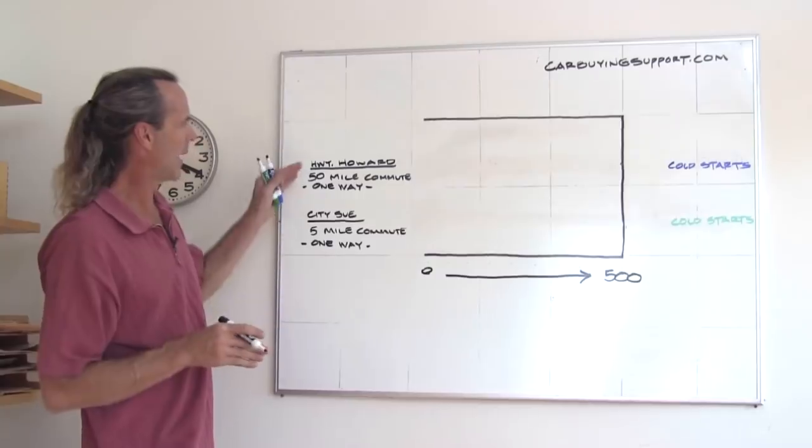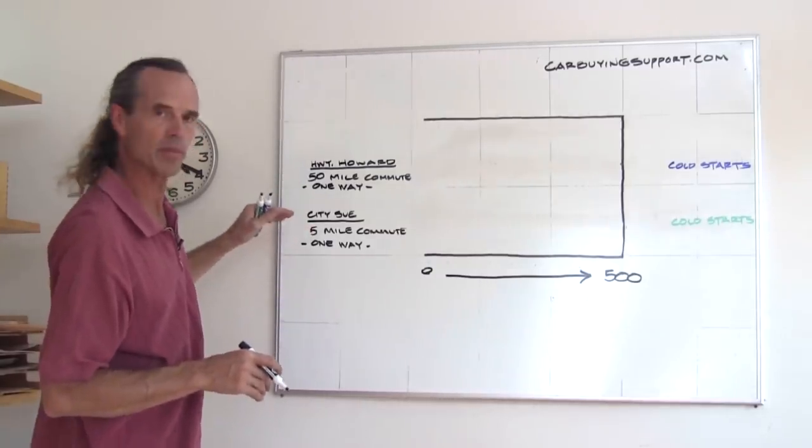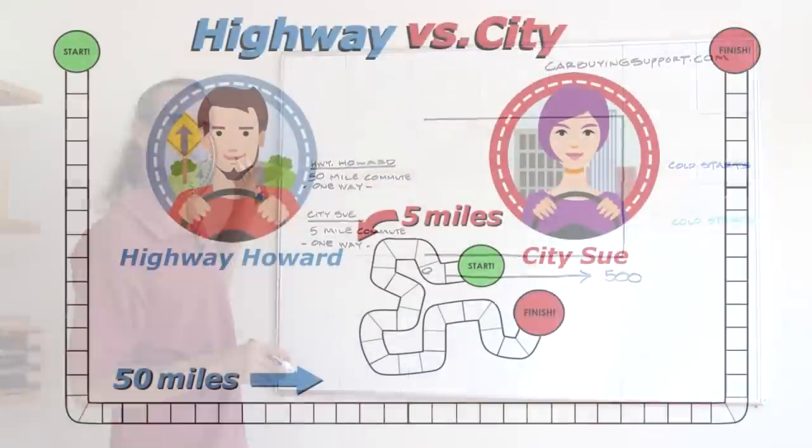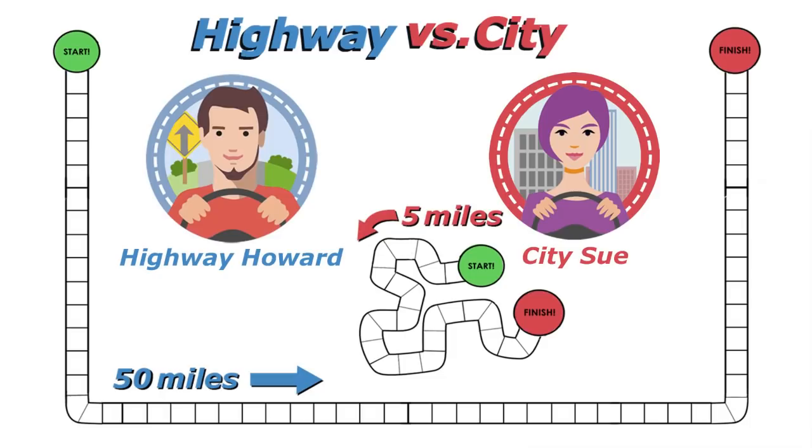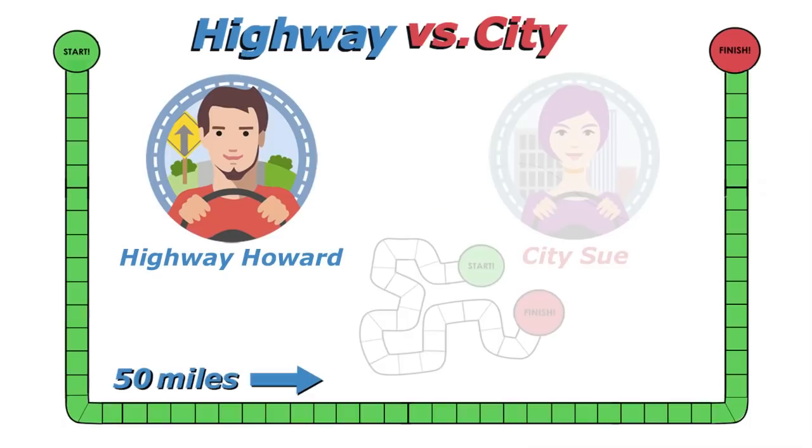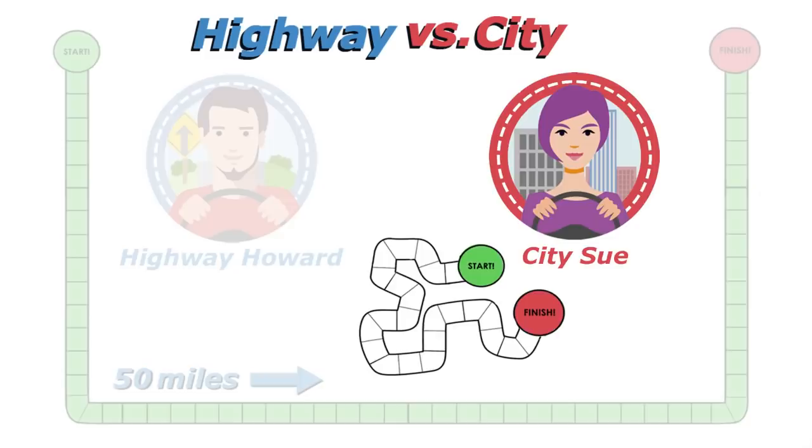To illustrate highway miles versus city miles, I'm going to be using two drivers with different driving behaviors. One I'm calling Highway Howard, who has a 50-mile commute one way to work, and the other one is City Sue, who has a five-mile commute.